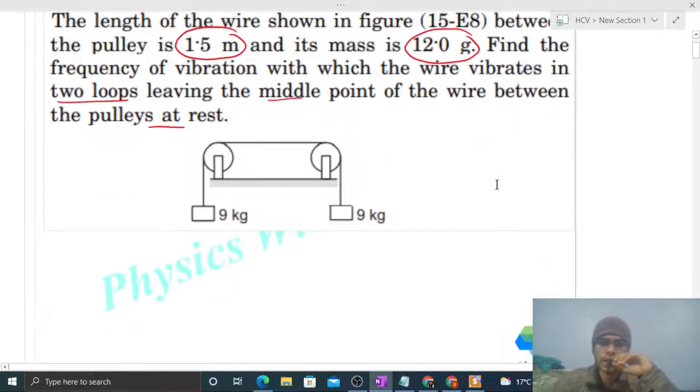This is the diagram. Can you find the tension in the wire? The tension balances the block's weight, so tension will be simply 90 Newton, which is mg. Right? Similarly, the tension here balances this block's weight.